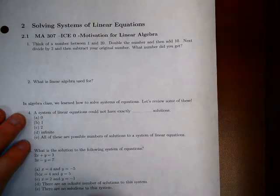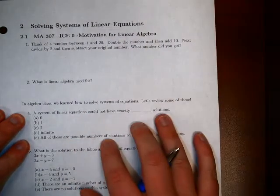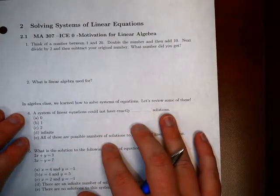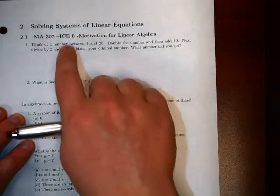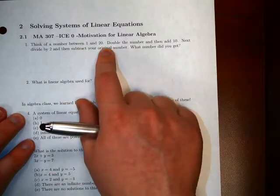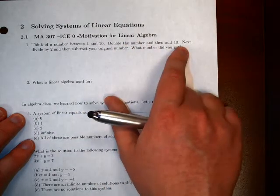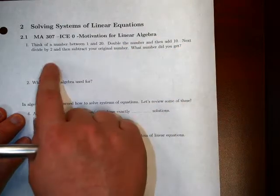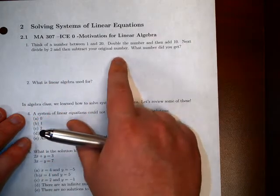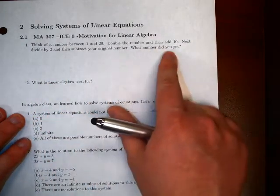Alright, so for this one, I haven't really learned anything yet, except for if you've looked at the lab already. So what I want you to do is think of a number between 1 and 20. Got your number? Great. Now double your number, then add 10. Then after that, divide by 2, and then subtract your original number. What number do you get?